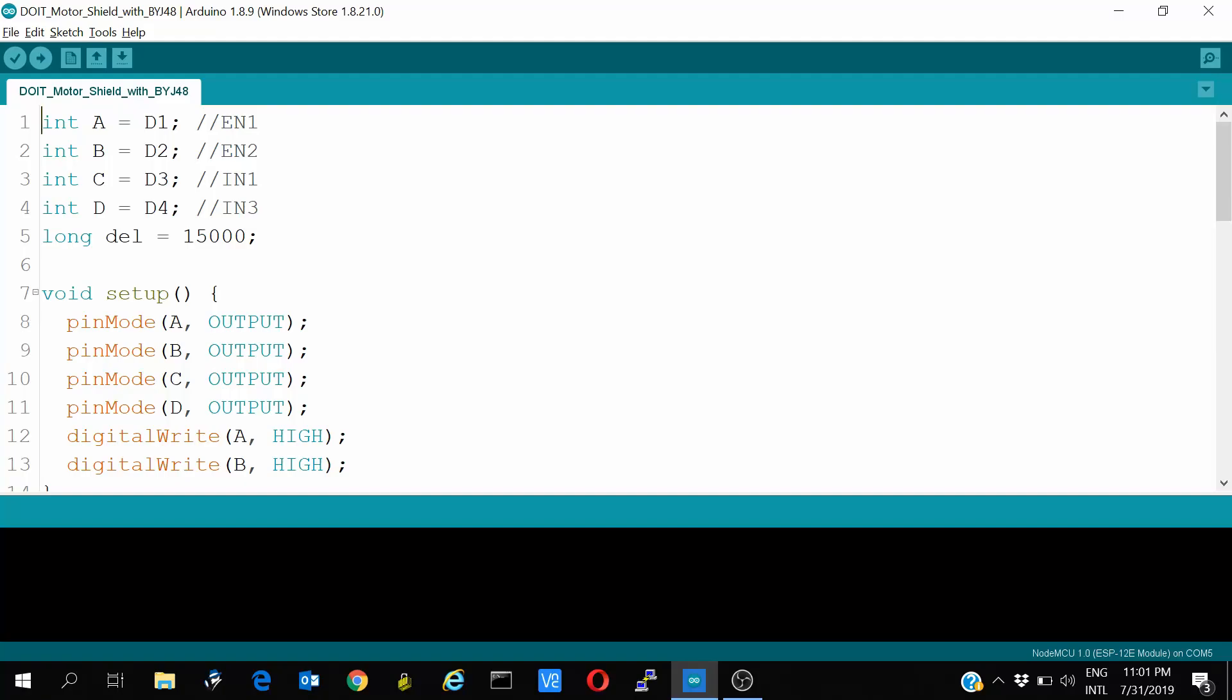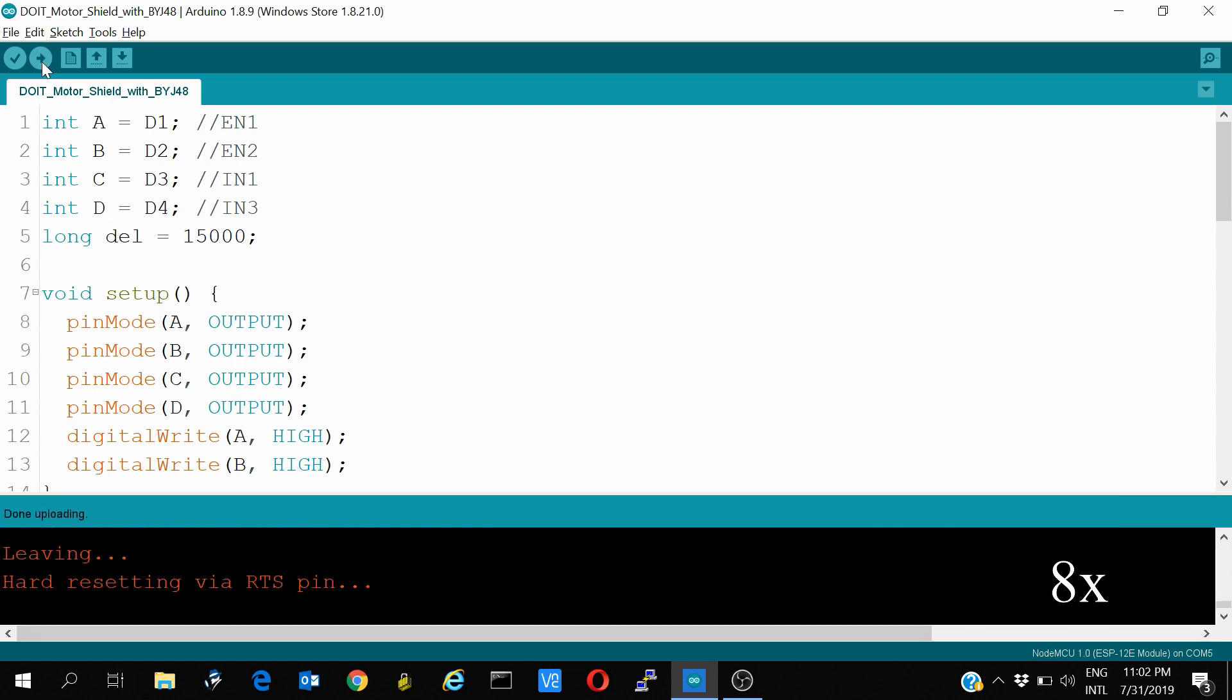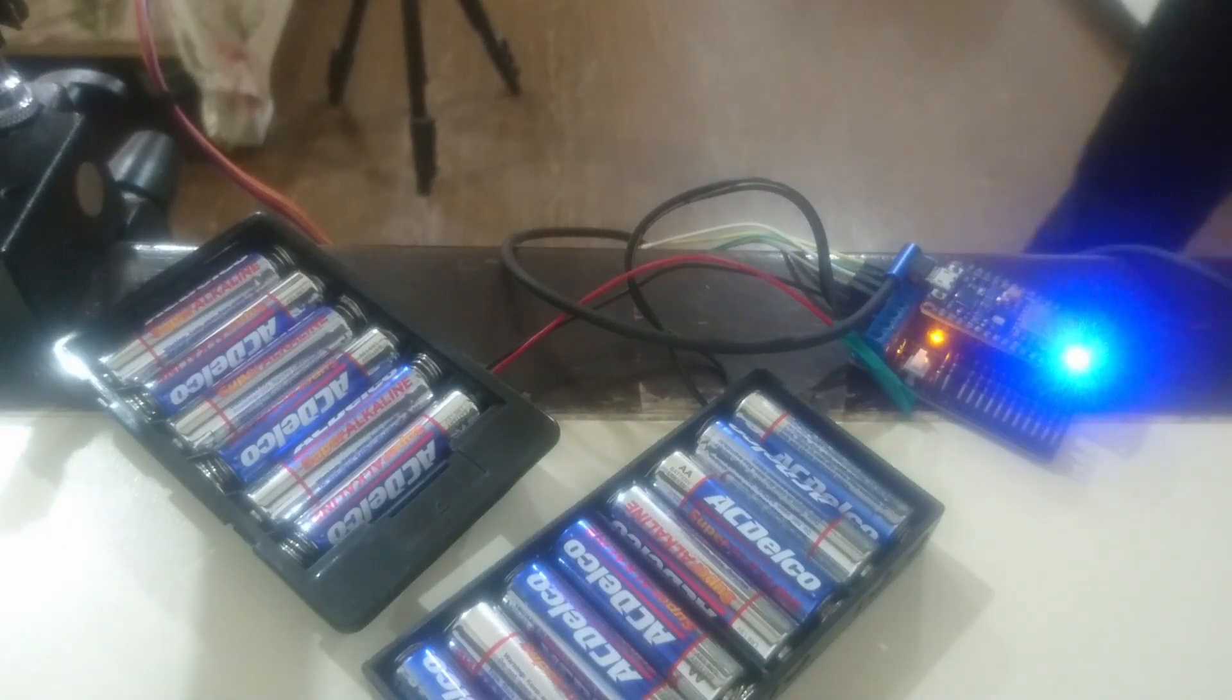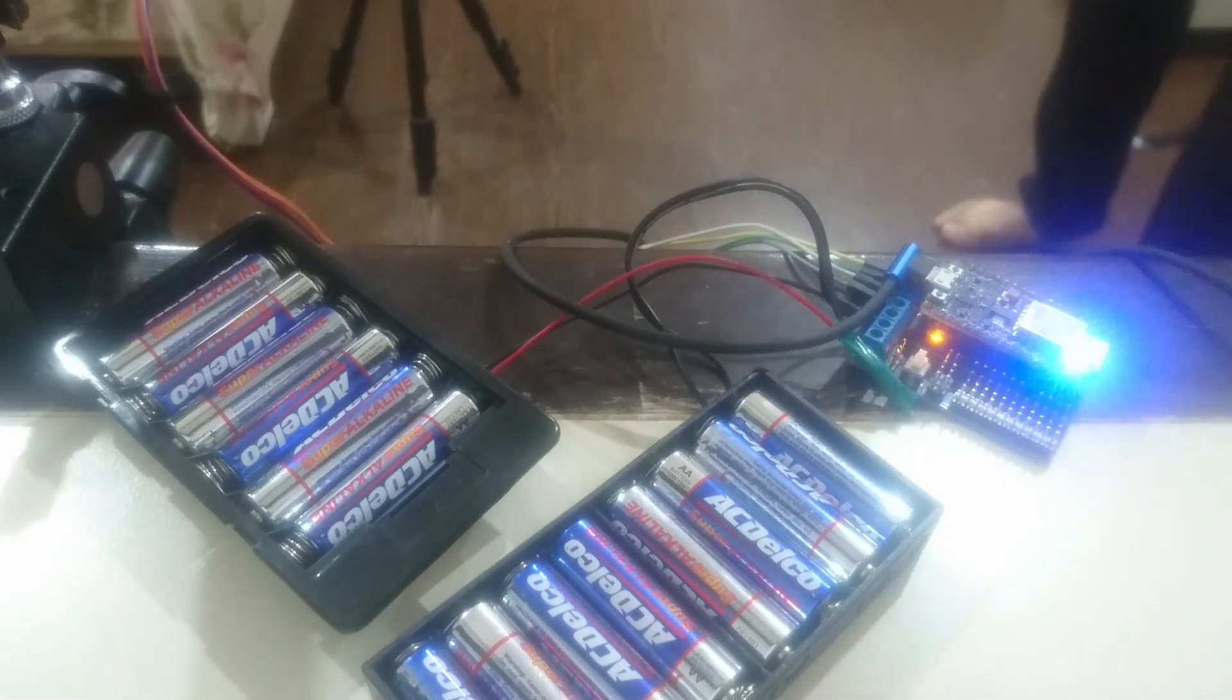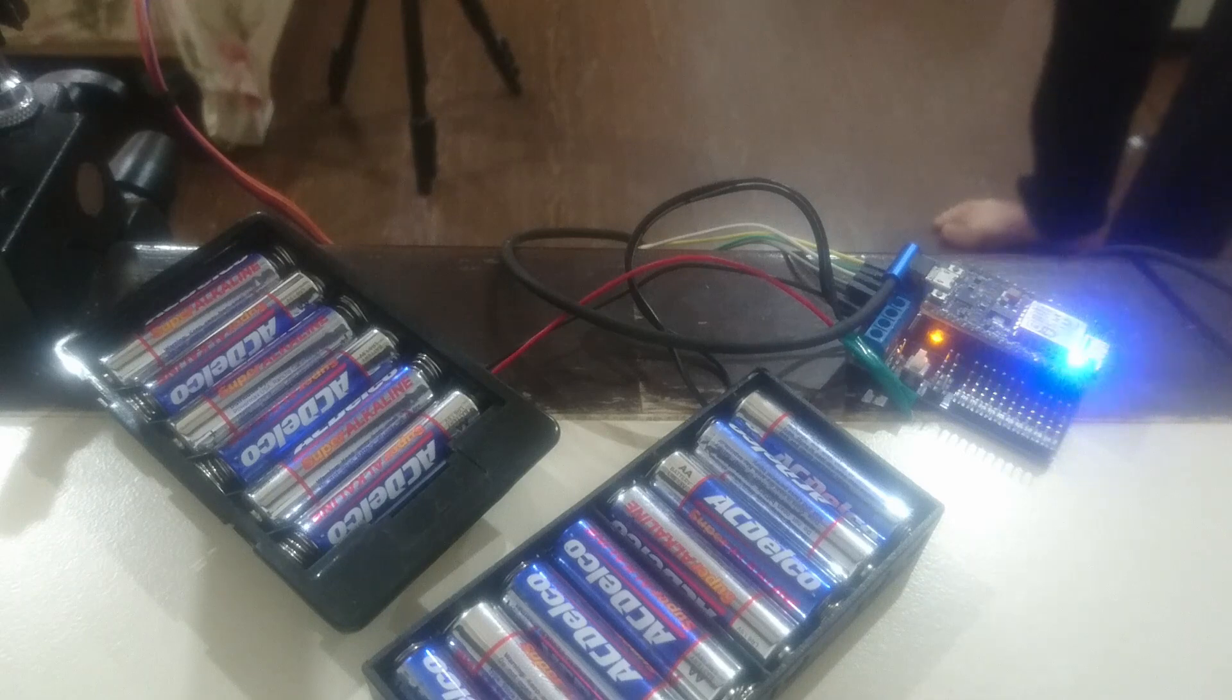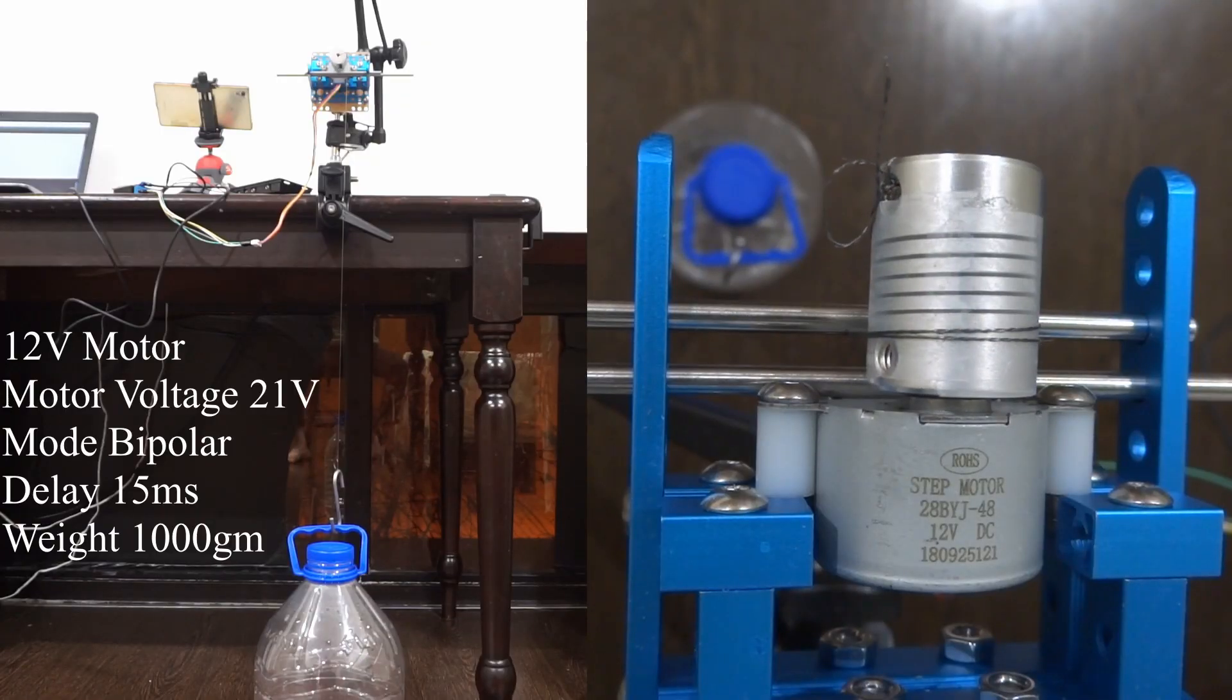As I was expecting that either the motor will burn or the driver will burn with high temperature, high voltage, high load, I did all the testing on camera. We will keep the delay same as before at 15ms but the code is for stepper in bipolar mode. We will use the motor shield. The voltage applied now is 21V with 14 1.5V batteries. I want to increase voltage and weight slowly as I don't want to burn anything. The weight of the bottle is 1kg.